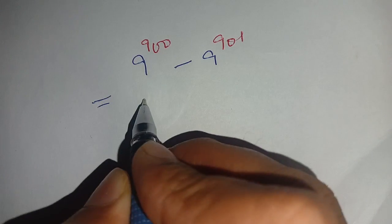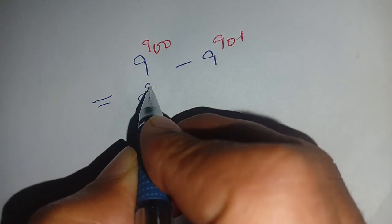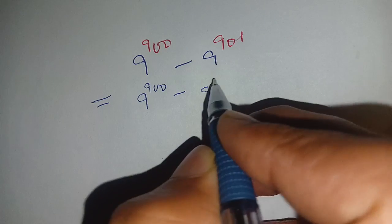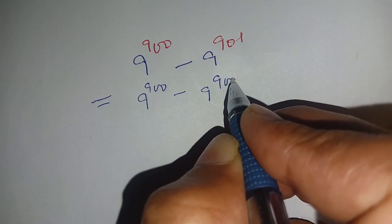We can write this as 9^900 - 9^901, which can be written as 9^900 - 9^(900+1).